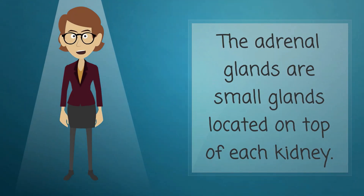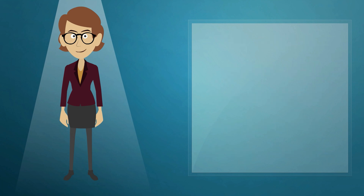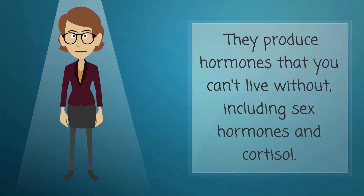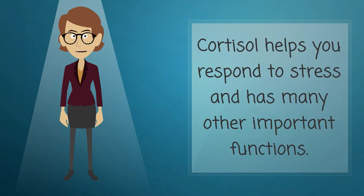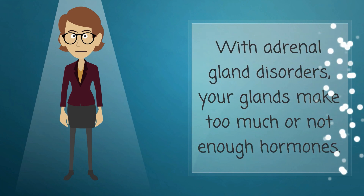The adrenal glands are small glands located on top of each kidney. They produce hormones that you can't live without, including sex hormones and cortisol. Cortisol helps you respond to stress and has many other important functions.